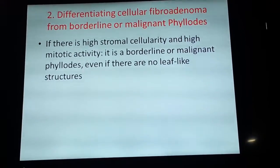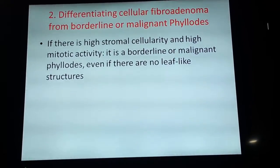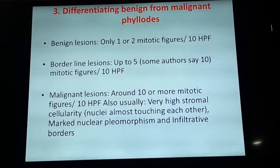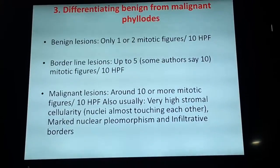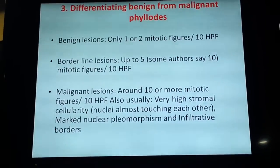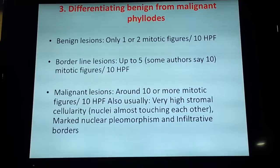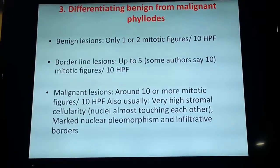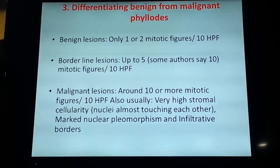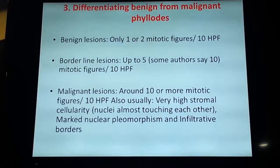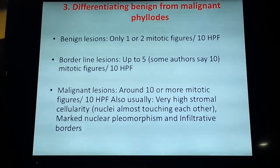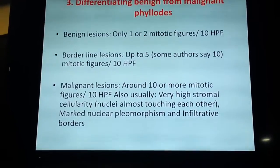It's getting complicated, but I hope the example will clarify the situation. It's a caring problem. When differentiating benign from malignant filoides tumor, you rely on mitotic activity as well as the degree of nuclear cluomorphism. Malignant lesions have high mitotic activity and high nuclear cluomorphism, and usually the border of the lesion is infiltrated.